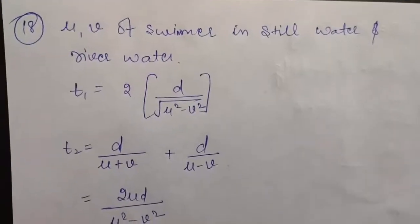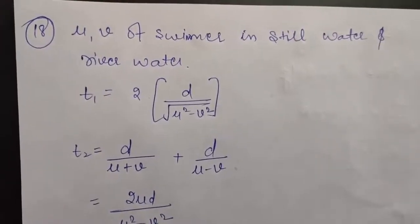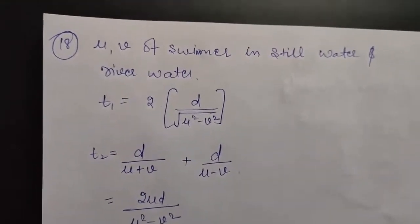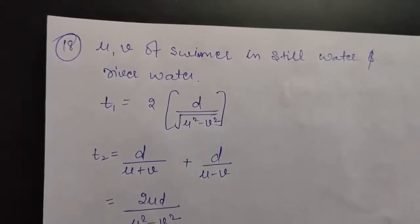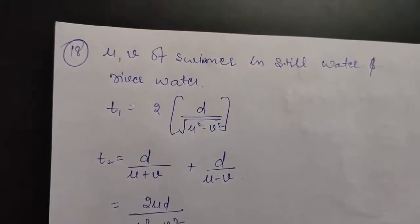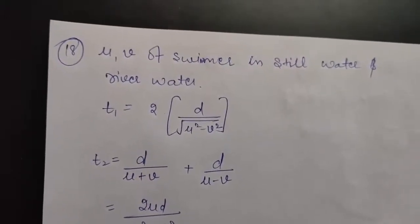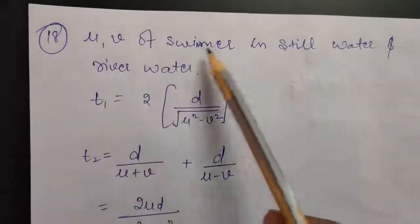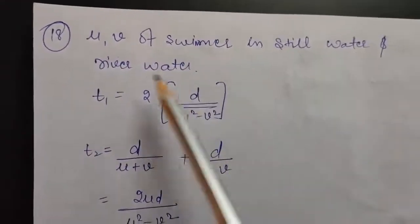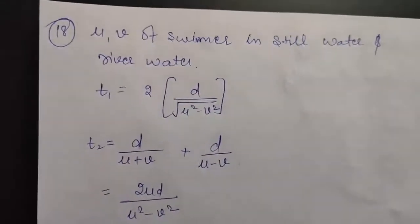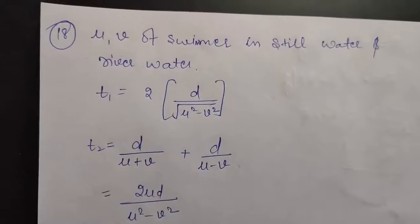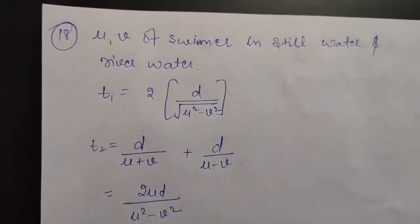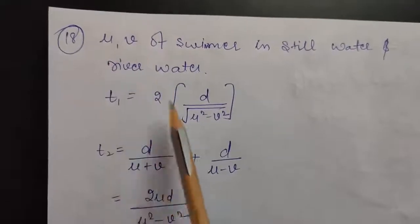In question number 18, a swimmer crosses a flowing river of width d to and fro in time t1. The time taken to cover the same distance up and down the stream is t2. If t3 is the time the swimmer would take to swim a distance 2d in still water, then prove that t1² = t2 · t3. Let u and v be the velocities of the swimmer in still water and river water respectively.